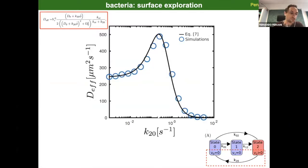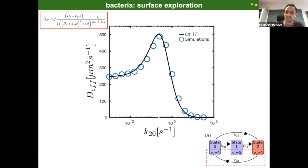The diffusion coefficient depends on the topology of the Markov chain we described before, as well as on the actual values of the transition rates. Now let me show you the behavior of the diffusion coefficient as a function of one of these transition rates — specifically the transition rate k→0, which controls how you go from state two to state zero and controls the average run time of the bacterium.